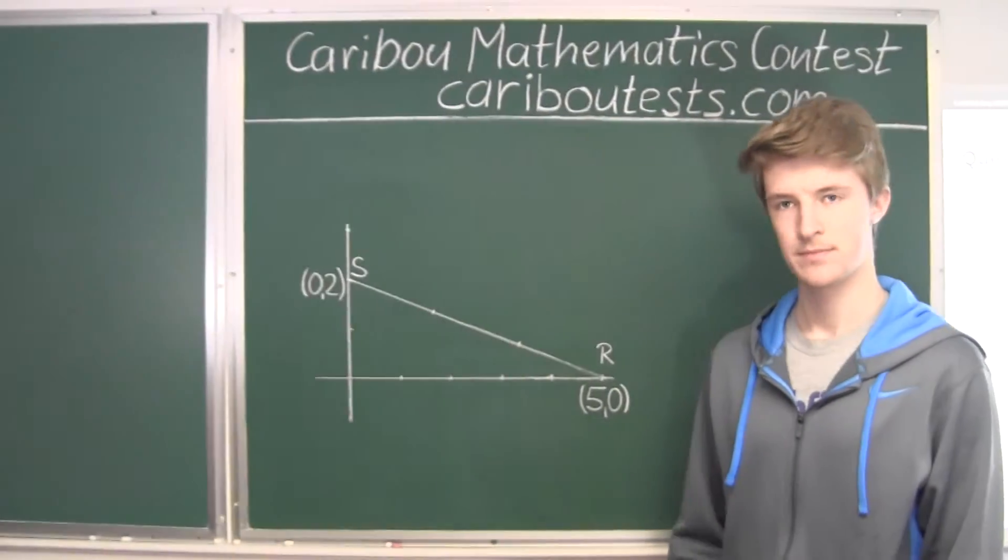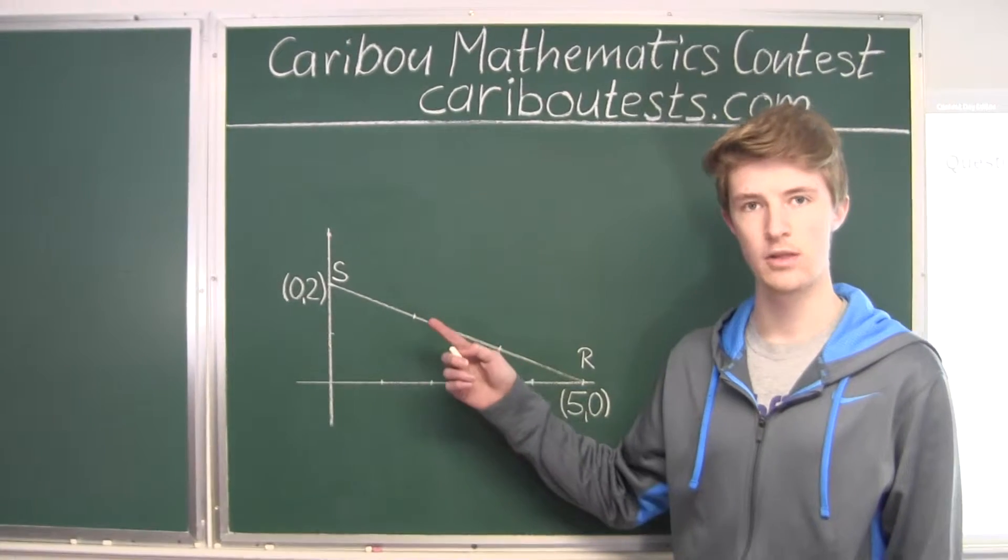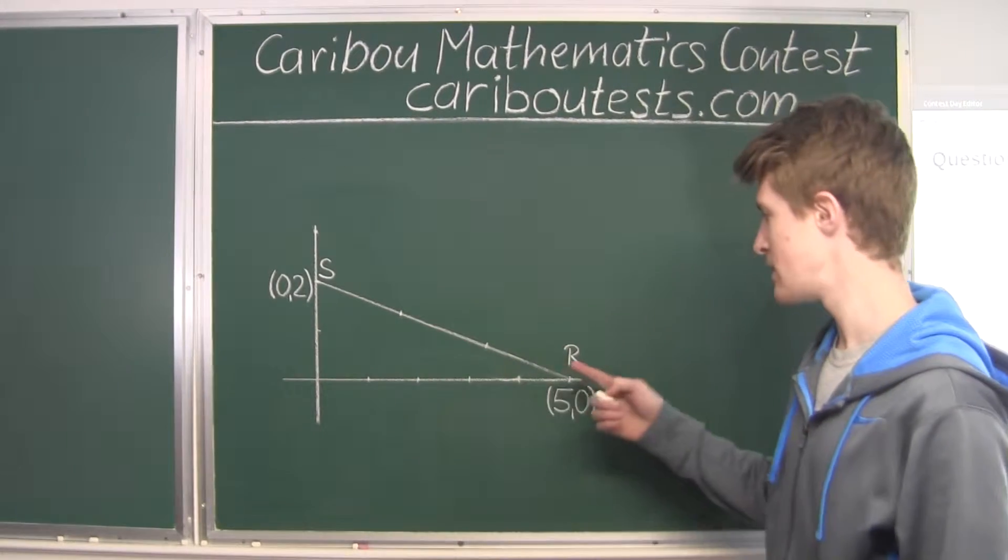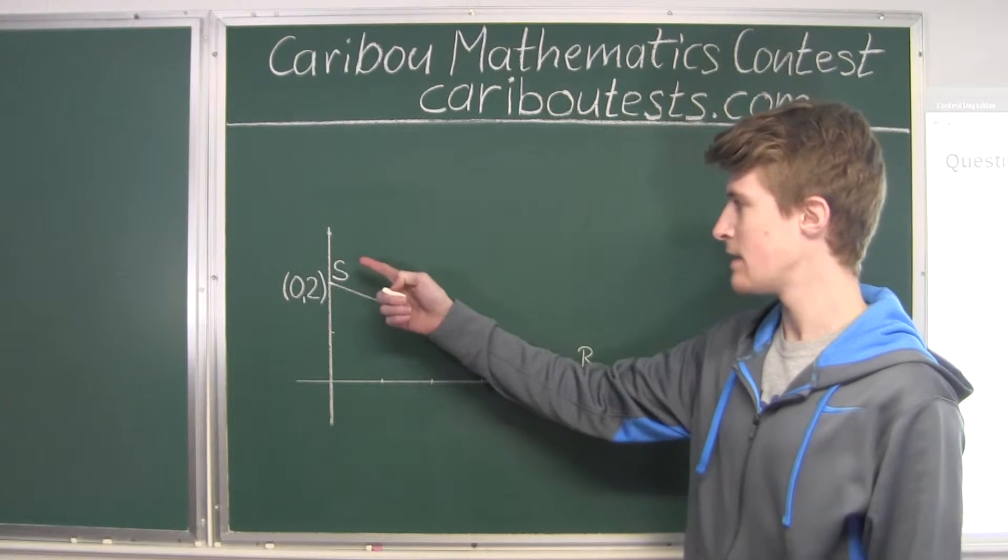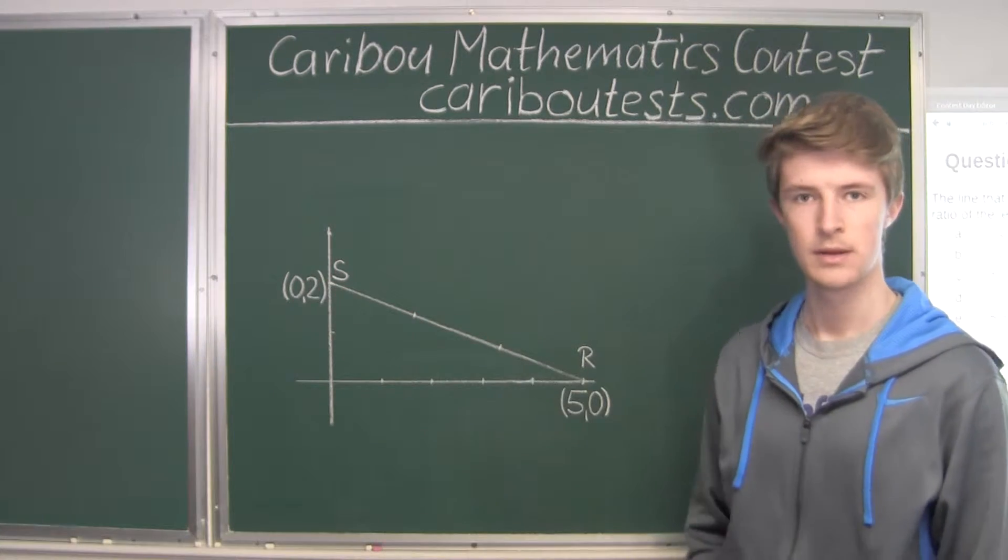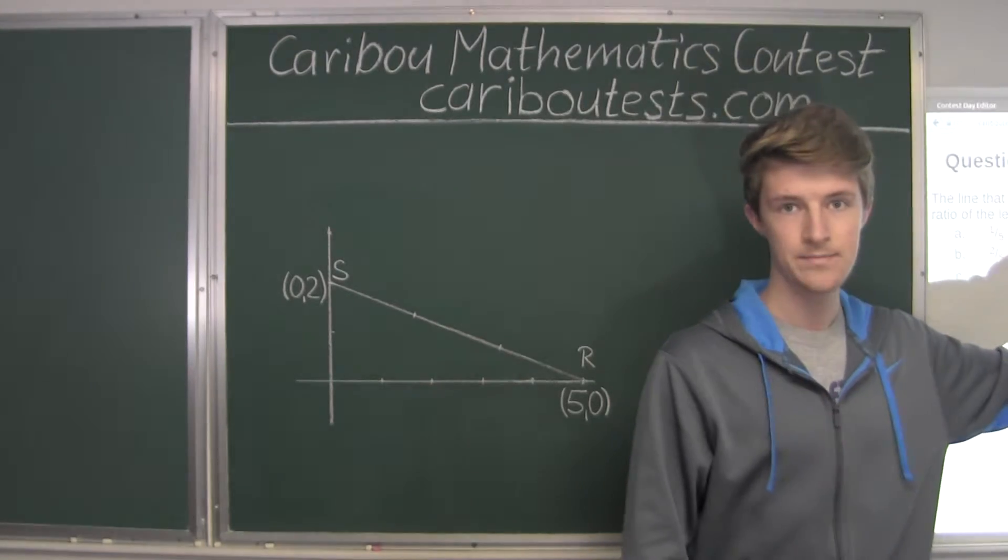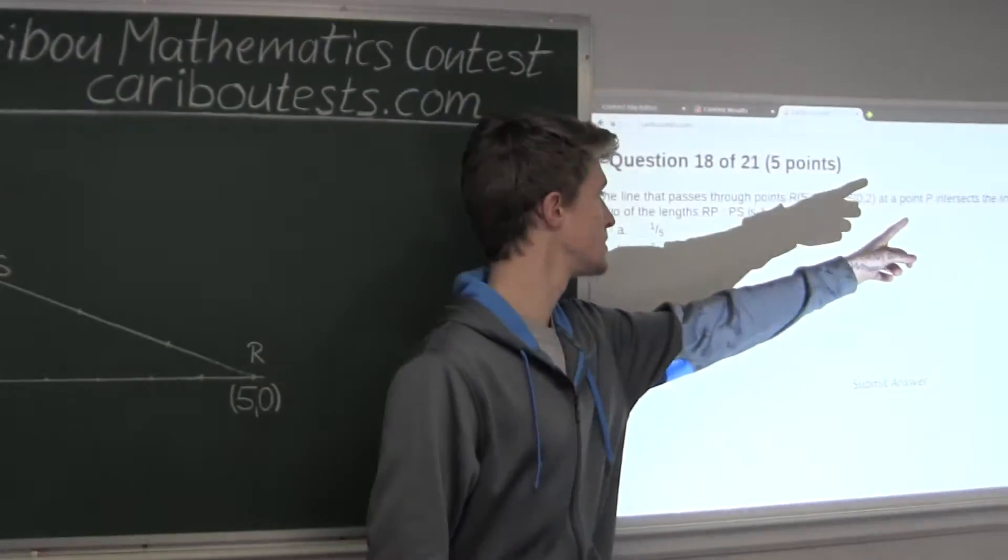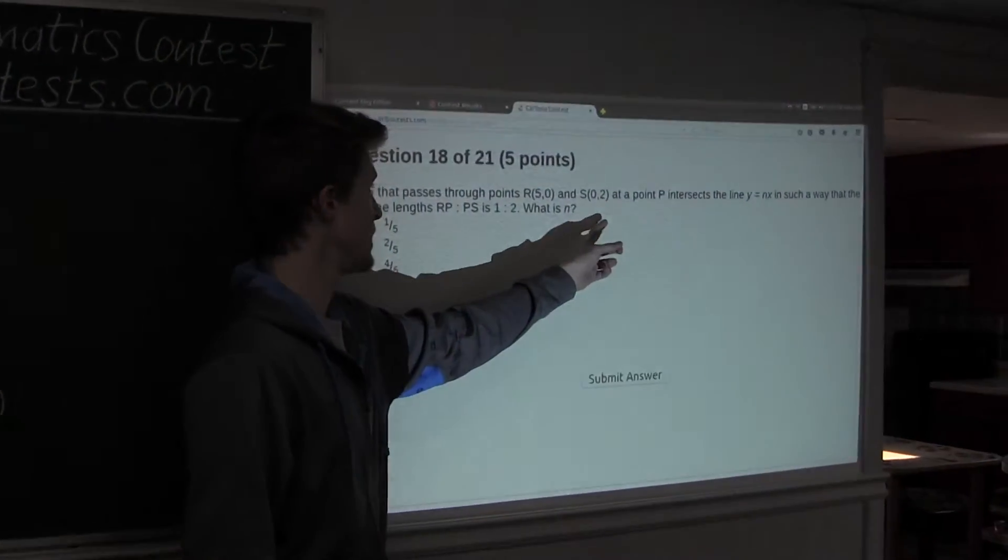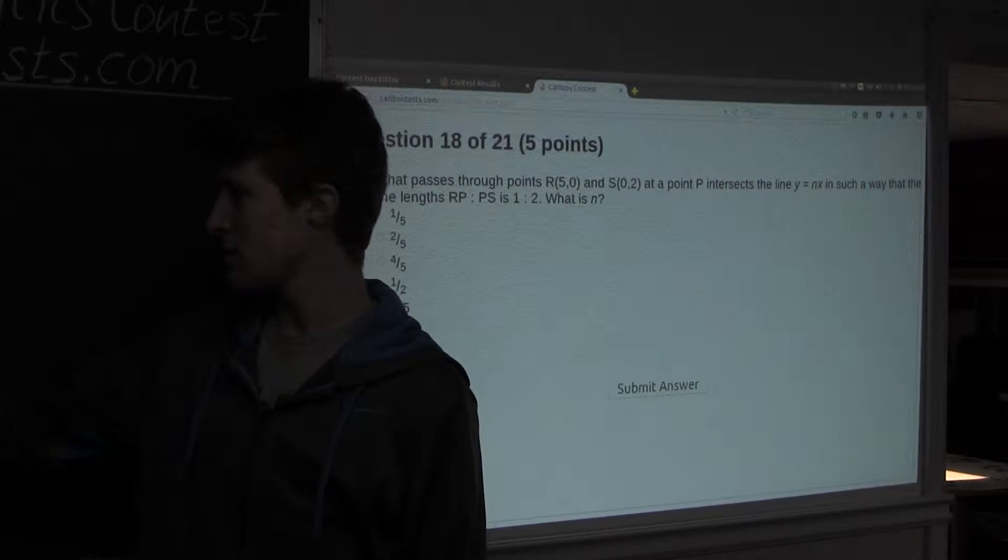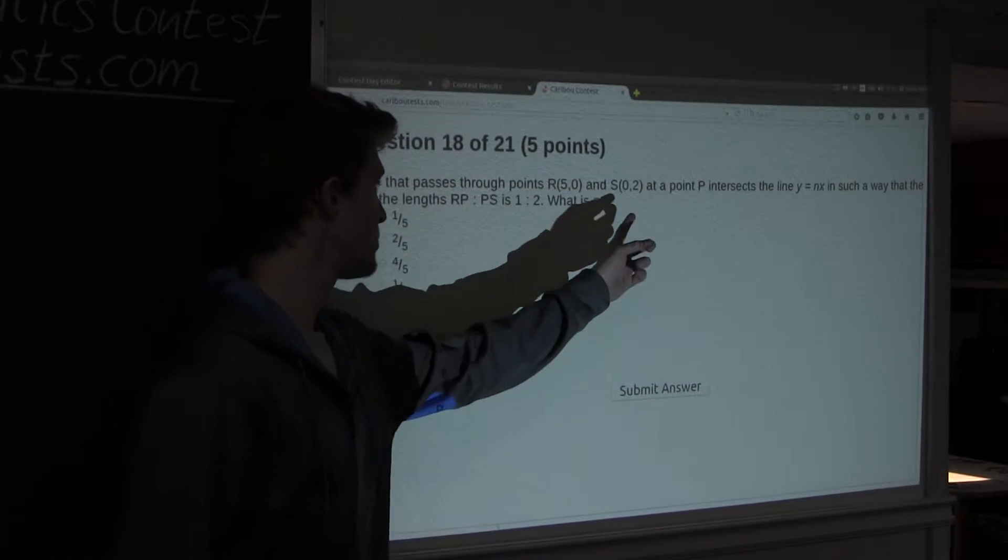Okay, so this is a sketch of the line on the grid with the points R(5,0) and S(0,2). Now, we know from the question that the line Y equals NX has a point, or intersects this line RS at a point P.